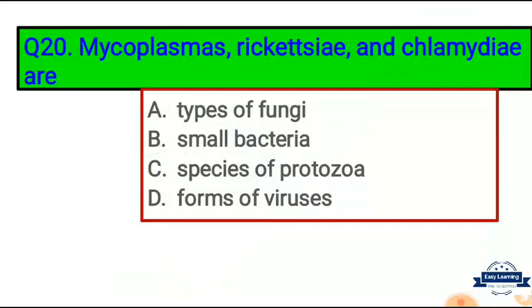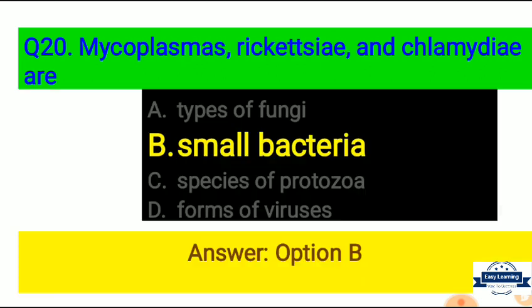Question 20 (last question): Mycoplasma, Rickettsia, and Chlamydia are — Option A: Types of fungi, Option B: Small bacteria, Option C: Species of protozoa, Option D: Forms of viruses. Correct answer is Option B — Mycoplasma, Rickettsia, and Chlamydia are small bacteria.